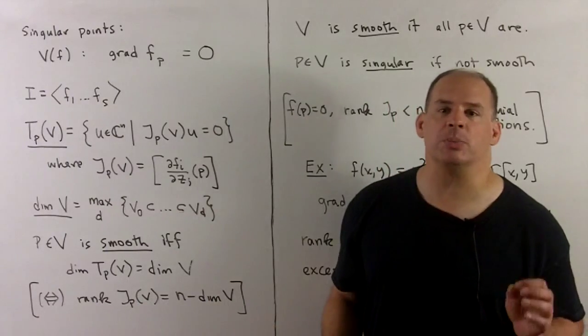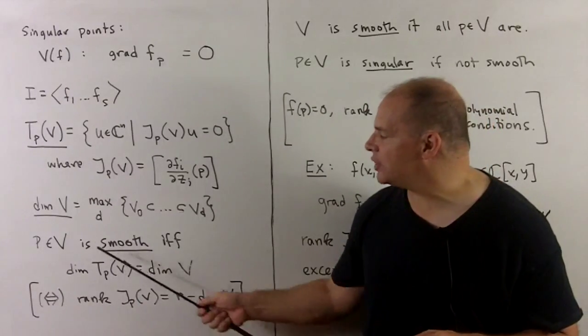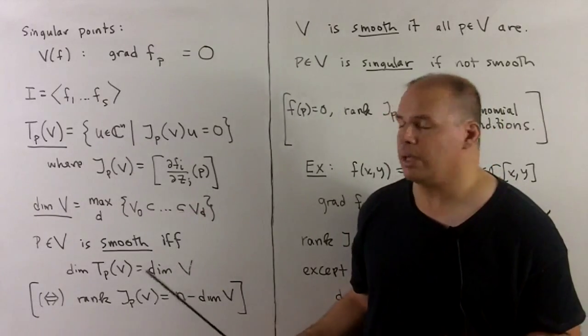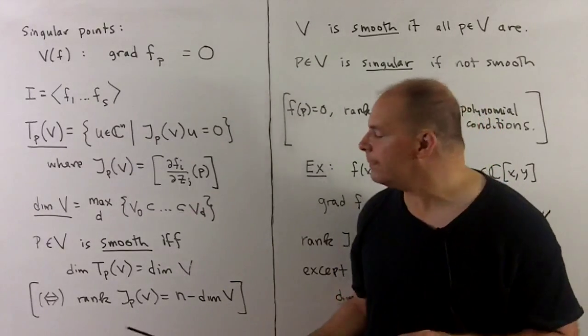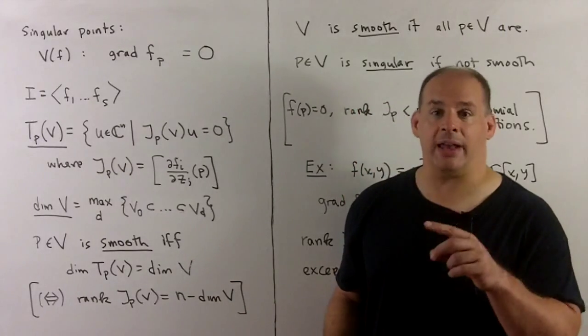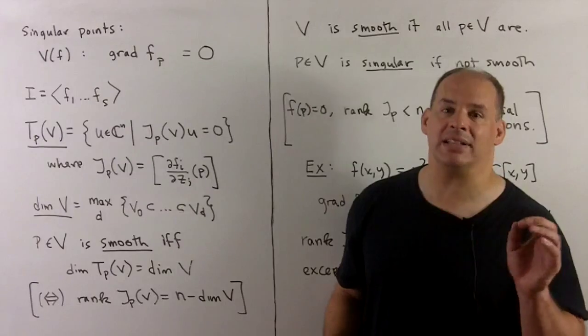We'll say point P in V is smooth if and only if the dimension of the tangent space at P is equal to the dimension of V. This condition is equivalent to a rank condition of the Jacobian, so the rank of the Jacobian at P equals n minus the dimension of V.